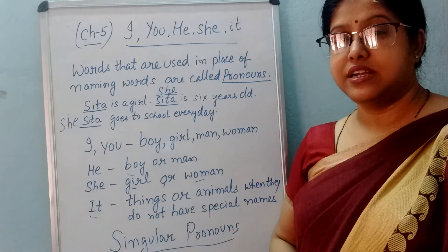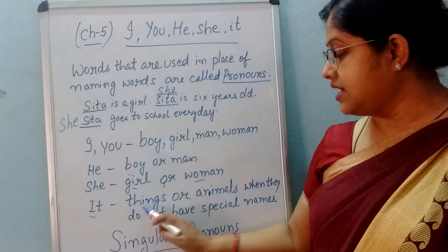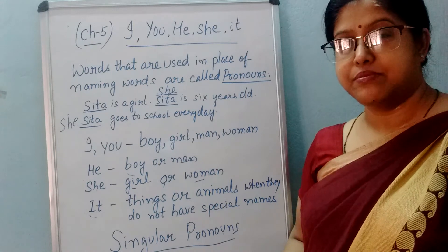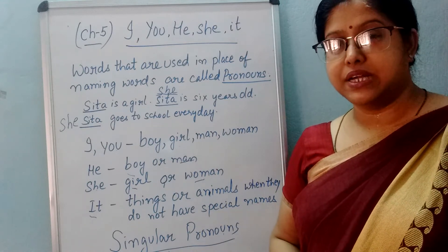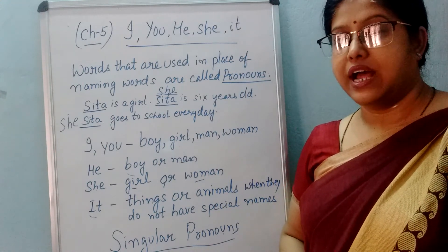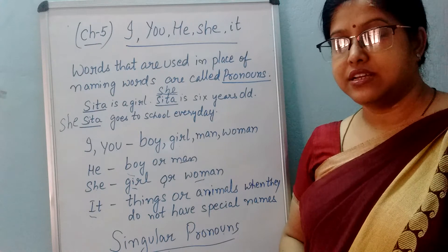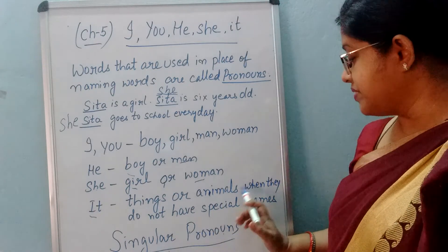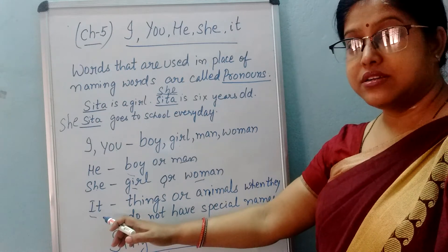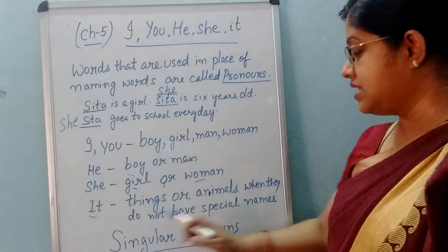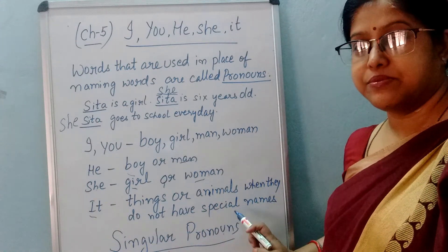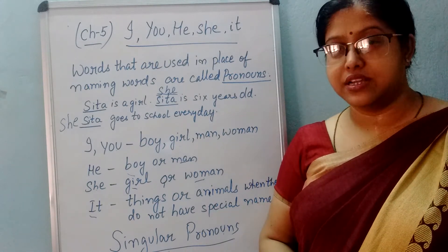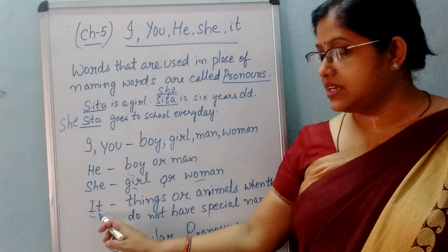It — it kahan lagta hai? Things or animals ke liye. Kisi bhi saman ke liye — jaise pen, pencil, bag — koi bhi saman ke liye it lagta hai. Or animals — yaani dogs ya birds wagaira. Unke liye it lagta hai. But kab lagta hai? When they do not have special names — jab unka koi special naam nahi hota hai, tab it lagta hai.